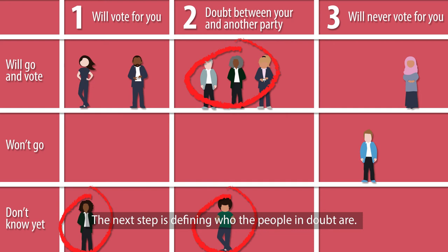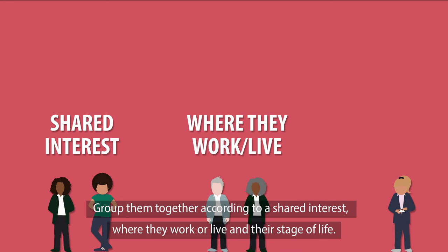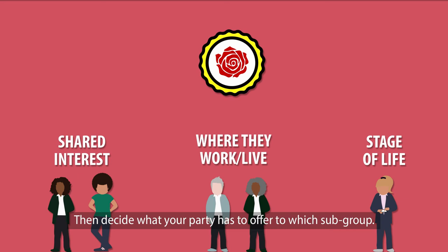The next step is defining who the people in doubt are. Group them together according to a shared interest, where they work or live, and their stage of life. Then decide what your party has to offer to each subgroup.